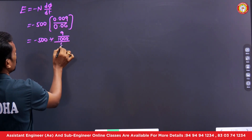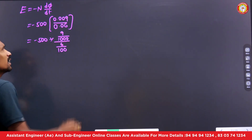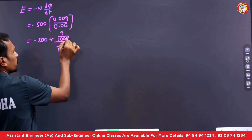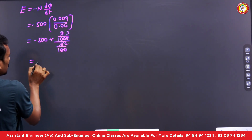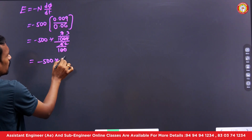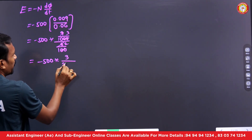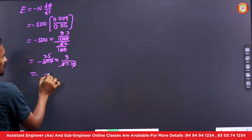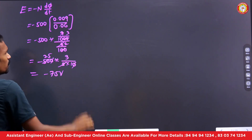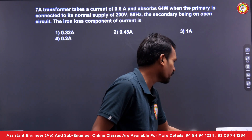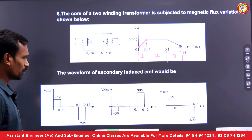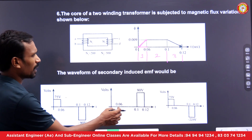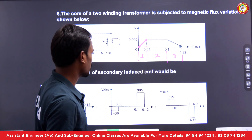Simplifying: 0.009 is 9/1000 and 0.06 is 6/100. Cancelling zeros: (9/1000) ÷ (6/100) = 9×100 / (1000×6) = 3/2 × (1/10). So E1 = −500 × (3/2) × (1/10) = −75 volts. In the first case, the induced EMF is −75 volts. Note there is no fourth option listed; we take that as the answer to construct.